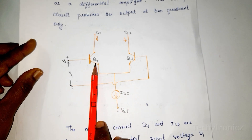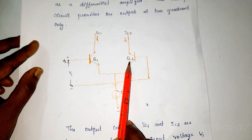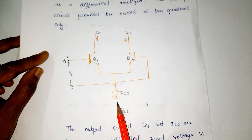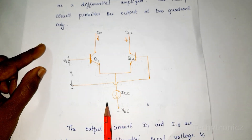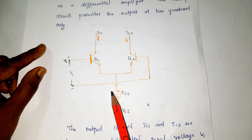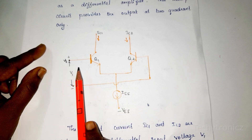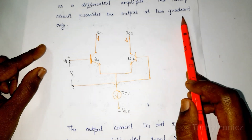Looking at the diagram, this is the differential amplifier. Q1 and Q2 transistors form the differential amplifier. The emitters are coupled together and we are giving the biasing current to the circuit. This multiplier circuit provides the output at two quadrants only. Two quadrant mode means one input voltage is held at the positive side only, while the other input swings in both positive and negative directions.